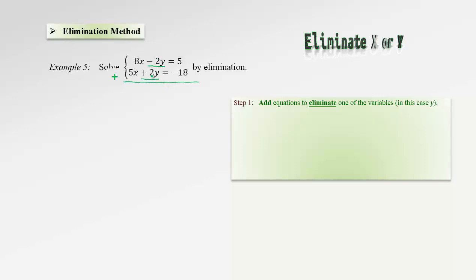These two terms are exactly opposite, so they will cancel each other. Adding the remaining terms: 8x plus 5x is 13x. On the other side, negative 18 plus 5 is negative 13. That makes it a lot easier. This equation involves only one variable, very easy to solve for x. Dividing by 13: negative 13 divided by 13 is just negative 1. Beautiful answer for x.